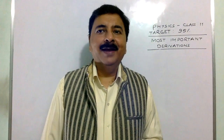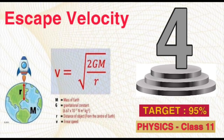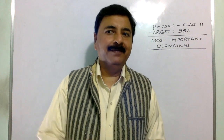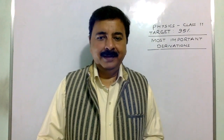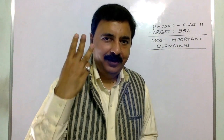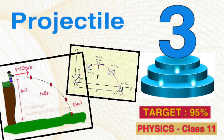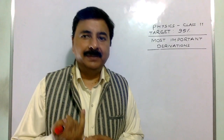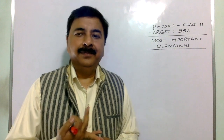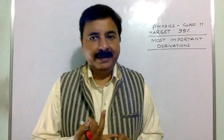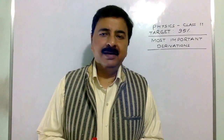Derivation number 4 is again from gravitation — escape speed. Whether you throw an elephant or a cockroach, escape speed is the same; it does not depend on the mass of the body but depends on the mass of the planet. Derivation number 3 is projectile motion — either oblique projectile or horizontal projectile. You have to cover equation of projectile, range of projectile, and time period of projectile. For an oblique projectile, the range will be the same when the angles are complementary. Cover all these small derivations — they are sure.